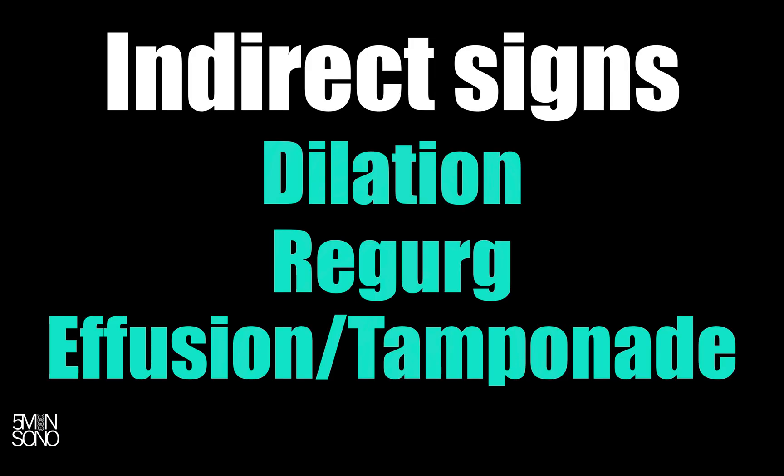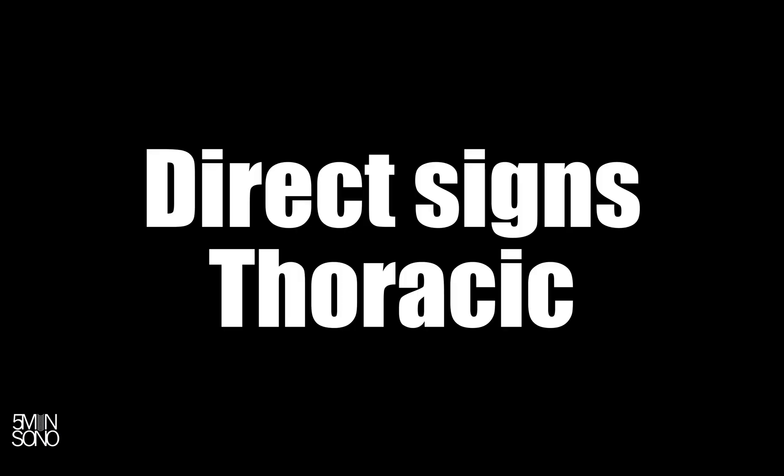Now let's talk about thoracic dissections and the indirect signs first. Dissections are going to be more common in areas where there is already dilation and aneurysm. Regurgitation can often be seen in an ascending aortic aneurysm, and if you have a dissection flap that extends into the pericardium, you can get an effusion and/or tamponade.